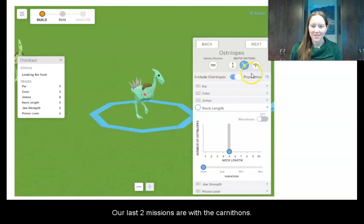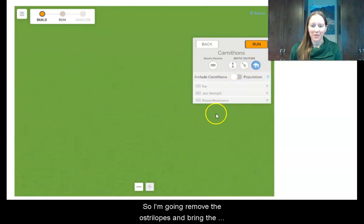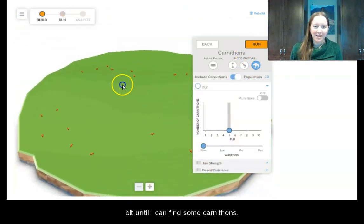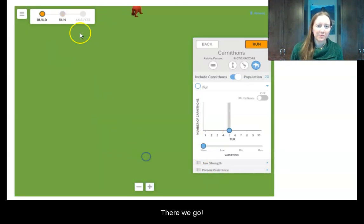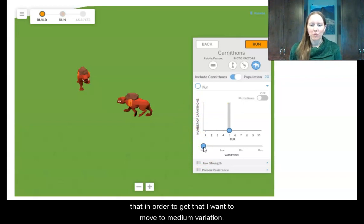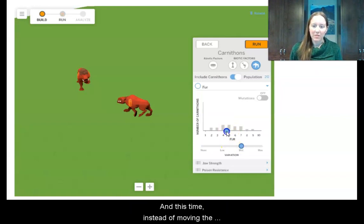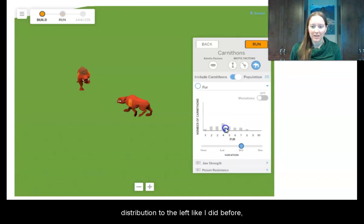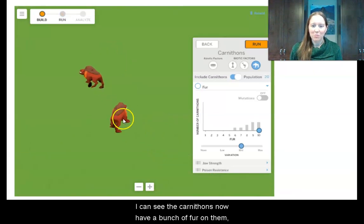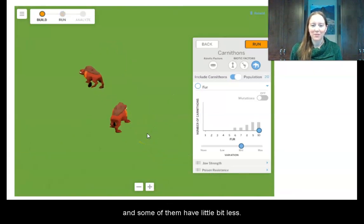Our last two missions are with the carnathons. So I'm going to remove the ostrilopes and bring the carnathons back. I'm going to zoom out a little bit until I can find some carnathons. And what I want to look at is having a lot of fur and some with medium fur. So I already figured this out with the ostrilopes that in order to get that, I want to move to medium variation. And this time, instead of moving the distribution to the left like I did before, this time I'm going to move it to the right. And so I can see the carnathons now have a bunch of fur on them and some of them have a little bit less. So most of them have a lot of fur and some of them have less fur.